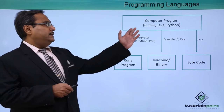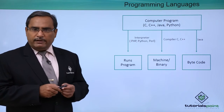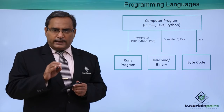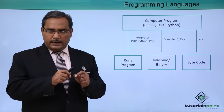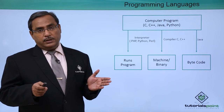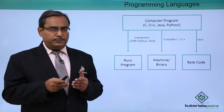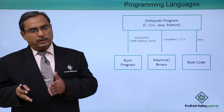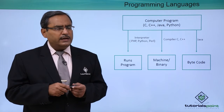A computer program, whether it be C, C++, Java, or Python, will be written in some high-level language. High-level language means a language that resembles English. We write our programs using English alphabets from our keyboards, but the computer cannot understand this. The computer can only understand machine language or low-level language. Therefore, we require some translator which will translate the high-level language program to the corresponding low-level language program. For different programming languages, we have different kinds of translators.